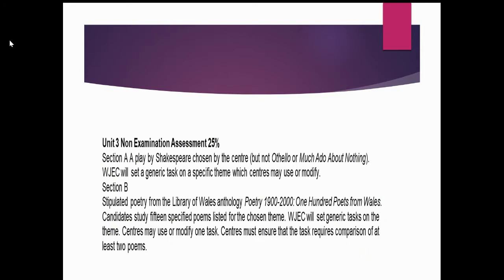The third unit is a non-examined assessment worth 25%, and it's a controlled assessment that takes place in a classroom setting. However, we use unannotated texts. We look at Macbeth and study a theme given to us from the WJEC. We'll normally study Shakespeare in the first half of the autumn term of Year 10, and then we move on to a range of Welsh poetry written in English. We analyse two poems out of the 15, and you then compare and make links.